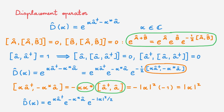Overall, we can write the displacement operator as the exponential of the raising operator term, the exponential of the lowering operator term, and a scalar exponential. The scalar exponential can be moved to the front, giving the conventional form. Both the original definition and this rewritten form will prove useful when working with the displacement operator.